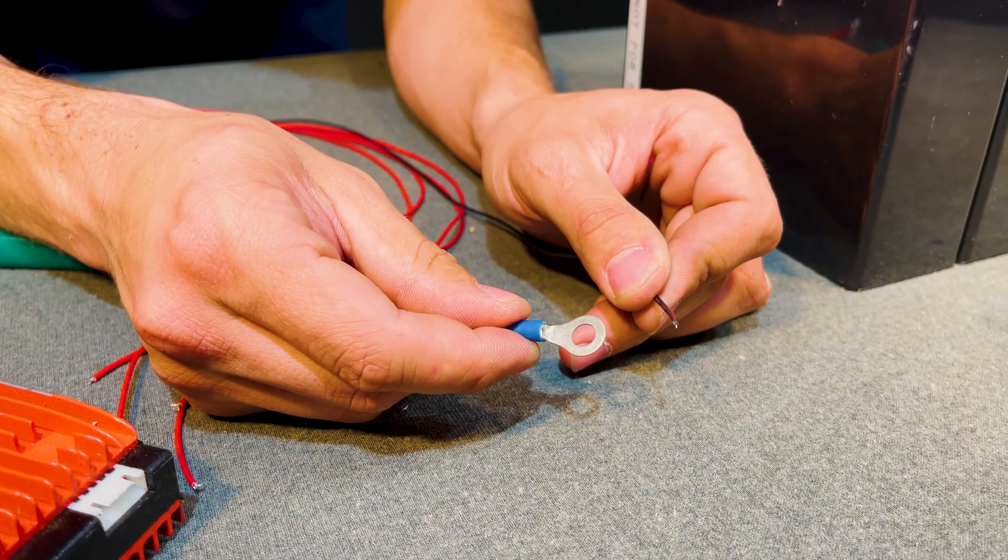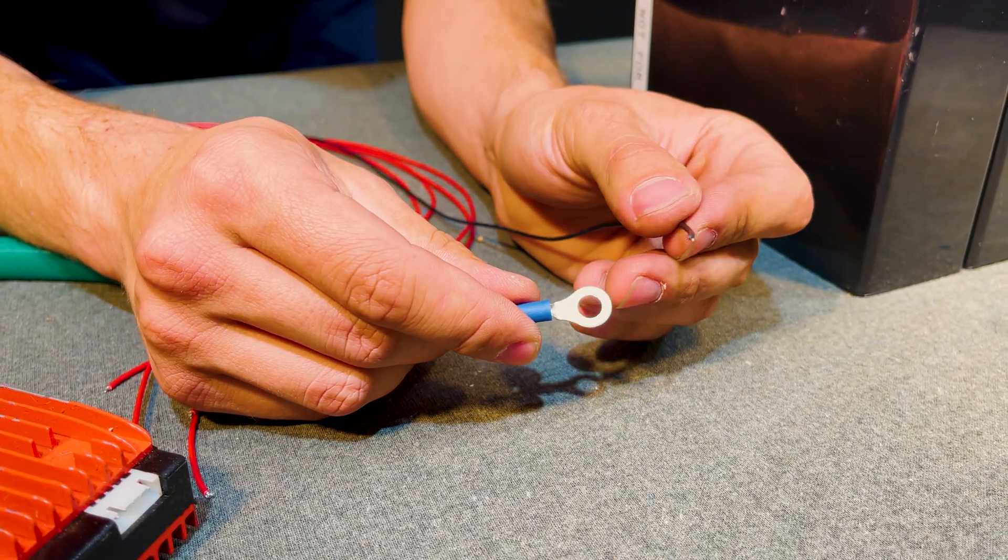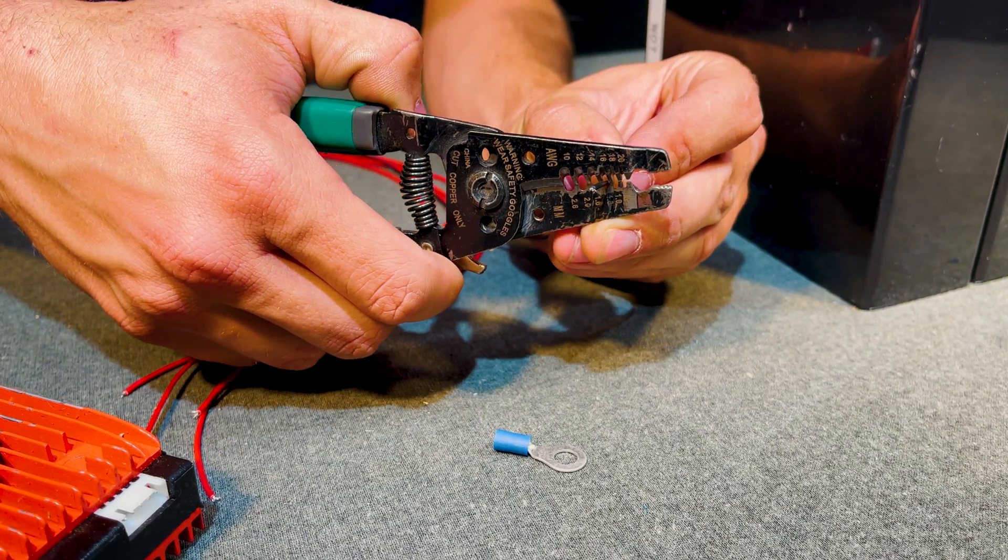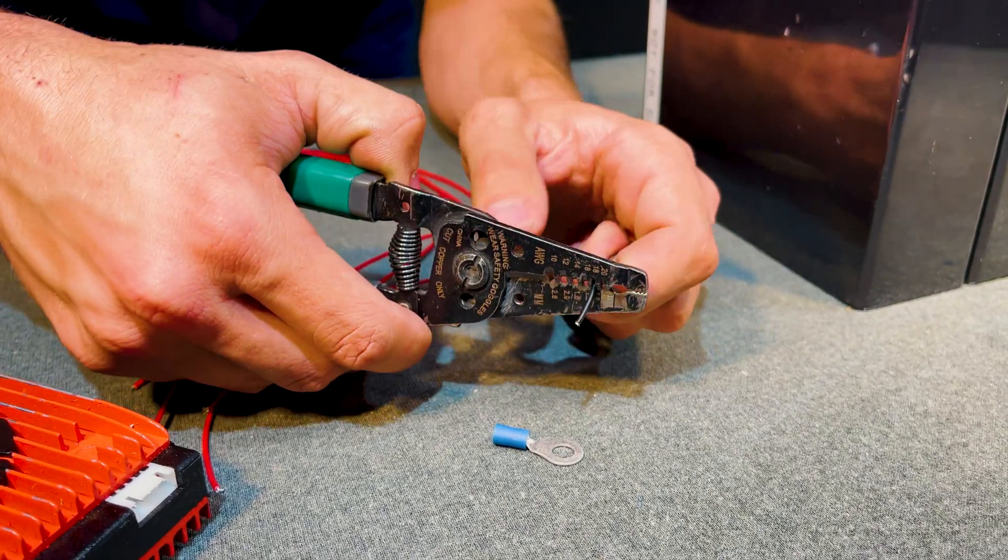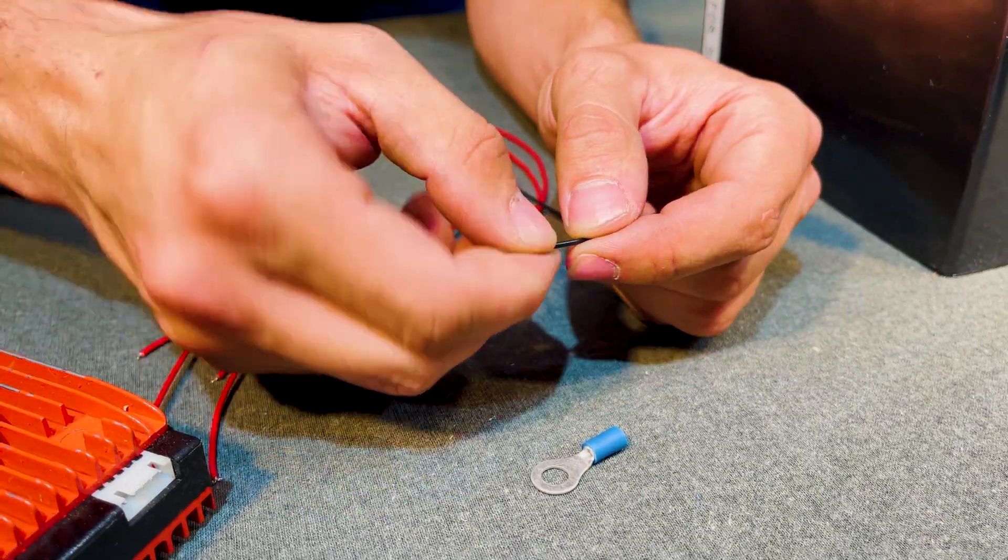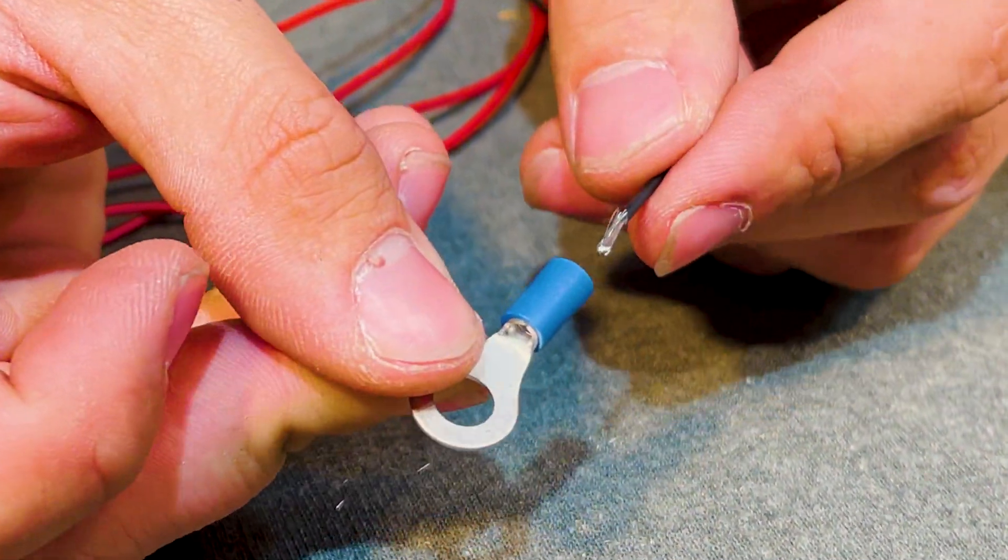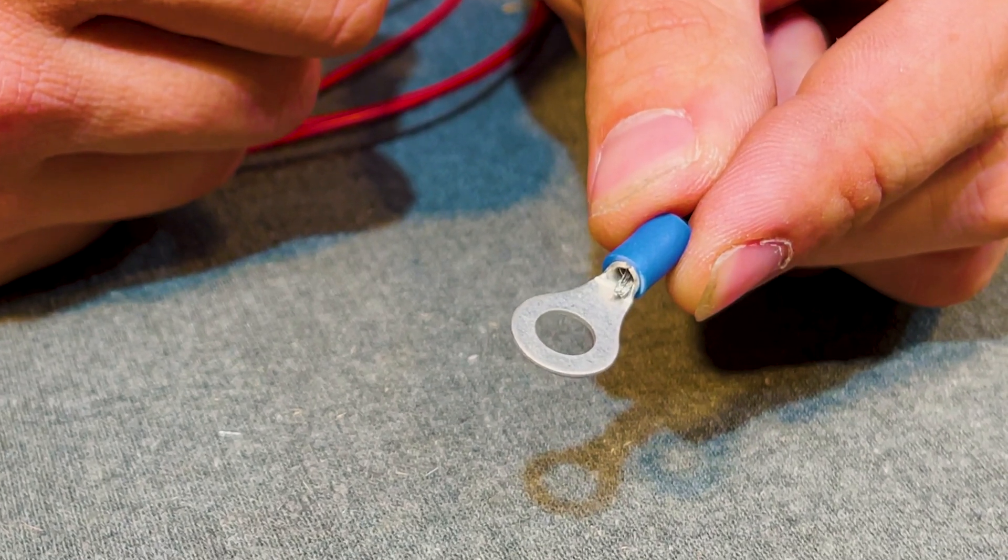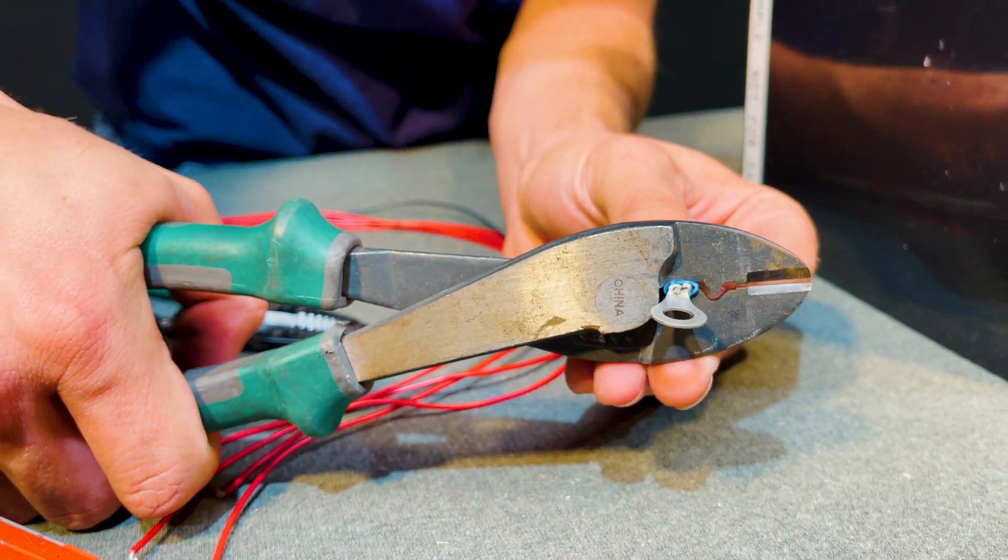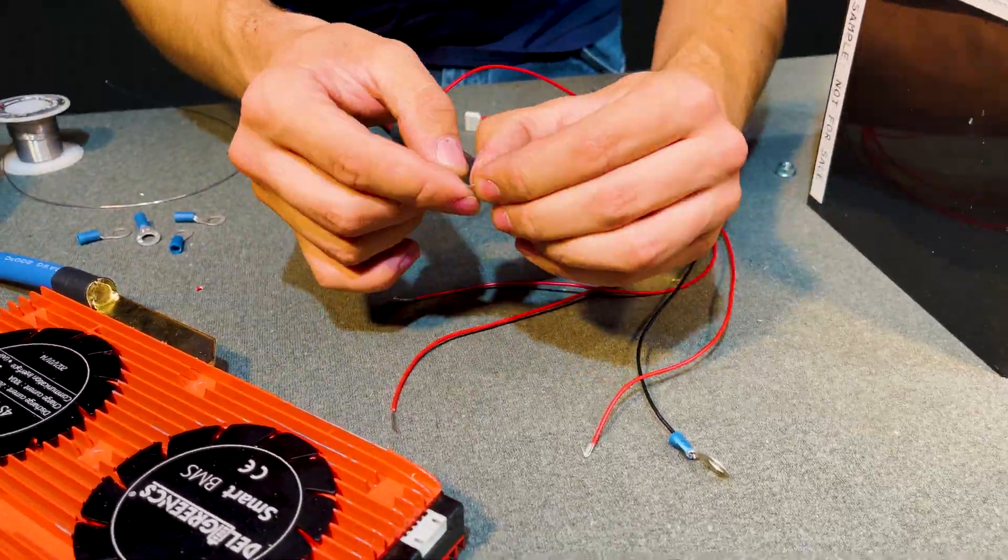We're going to install these ring terminals. Now in a perfect world I would be using the rings with the red bottom portion but in this case I couldn't find any of those with this size ring on them. So step one is we're going to strip back some of our wire. These wires are like 20 gauge wire so I got to go pretty small on my stripper and I stripped way longer than I need to here but that's okay. I'm going to twist this wire a bit and fold it back on itself. That way it's a little bit thicker and this ring terminal has a little bit more material to bite onto. Now using my crimper I can squeeze down on here as hard as I can and that's going to make a nice solid connection. We repeat that process on the remaining four terminals.